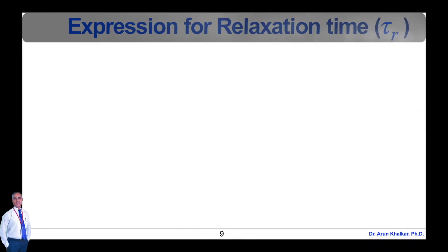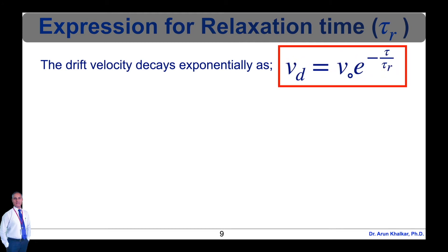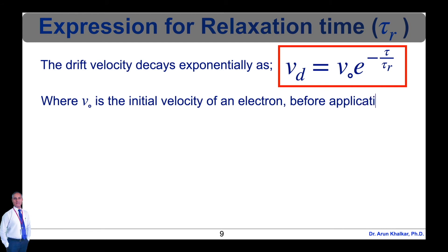Now let's see the expression for relaxation time tau R. When the metal is subjected to an external electric field, the electrons move opposite to the applied field. After removal of electric field, the drift velocity decays exponentially with the help of the equation Vd equals V0 exponential of minus tau upon tau R, where V0 is the initial velocity of an electron before application of electric field and tau R is the relaxation time.